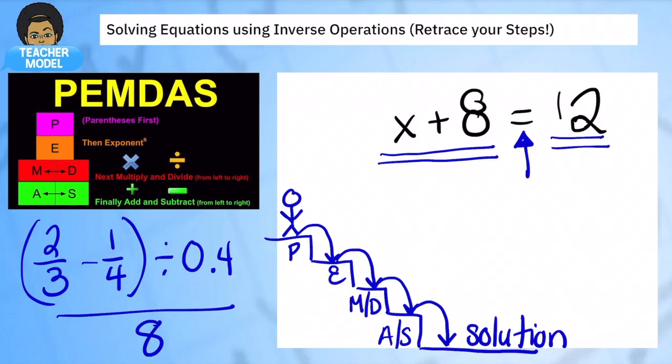I can't use order of operations because once I get to this simple term, I cannot combine these terms together. They're not like terms. So we're going to use backwards planning. And instead of adding 8, what we can do is the opposite, subtract 8 to get the x by itself.